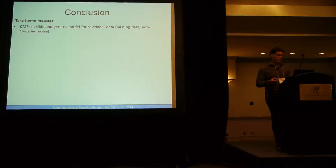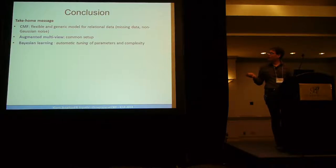I will skip the last experiment. I will speak about the take-home message. So CMF is a flexible and generic model for relational data. The augmented multi-view is very common. A lot of data has this setup. Bayesian learning really works. There is no tuning parameter. Even in the algorithm we did alternating least squares, there is no gradient step. We did not tune anything.